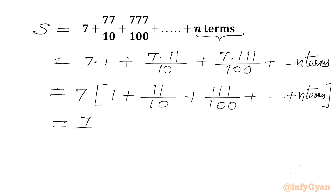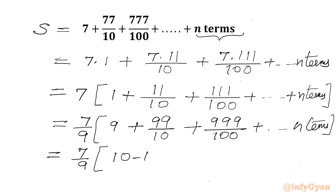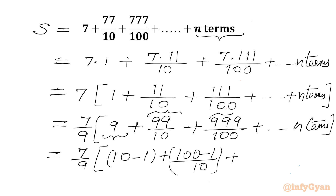Now I will divide and multiply by 9, giving 7 over 9. Multiply the bracket by 9: 9 times 1 is 9, 9 times 11 is 99 over 10, and 9 times 111 is 999 over 100, plus up to n terms. Now we can write 9 as 10 minus 1, 99 as 100 minus 1 over 10, and 999 as 1000 minus 1 over 100, up to n terms.